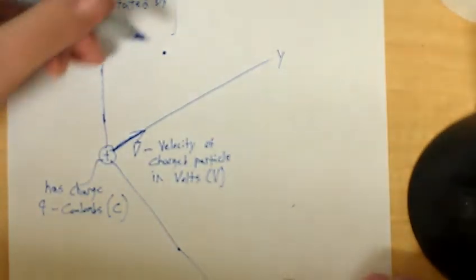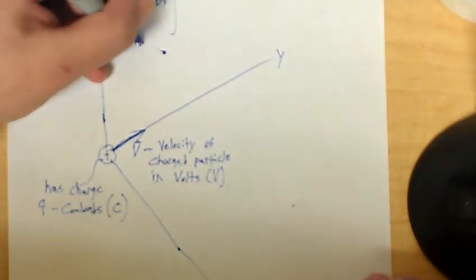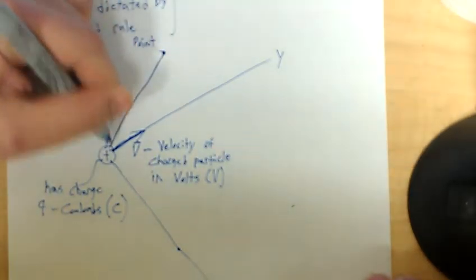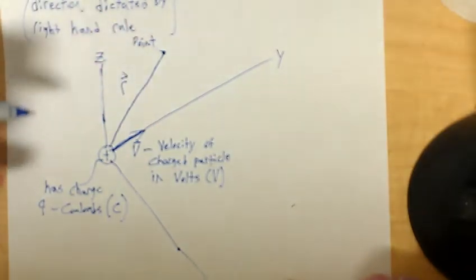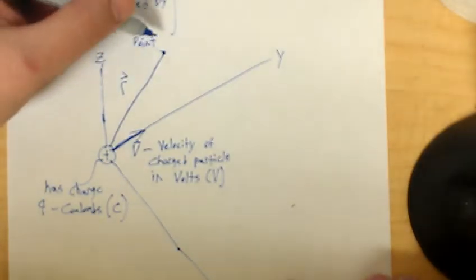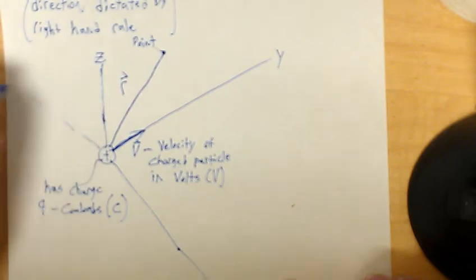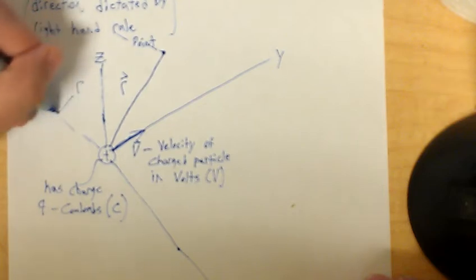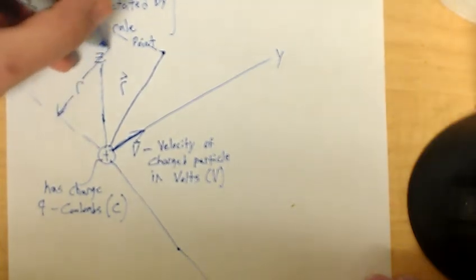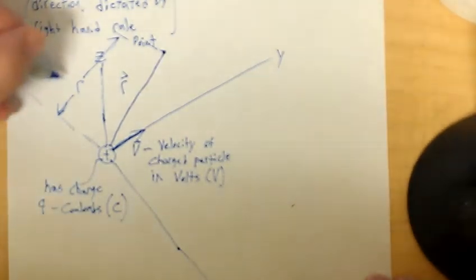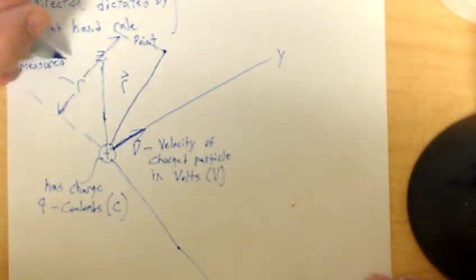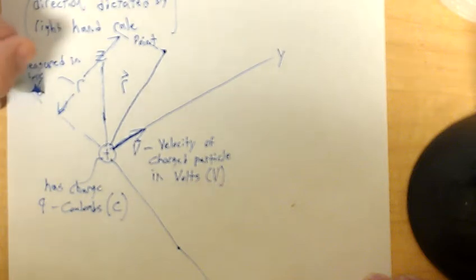The distance between our point and the charge will be our R, our R vector. And the distance between the charged particle and the point, that's our R. And this is measured in meters, which is just lowercase m.